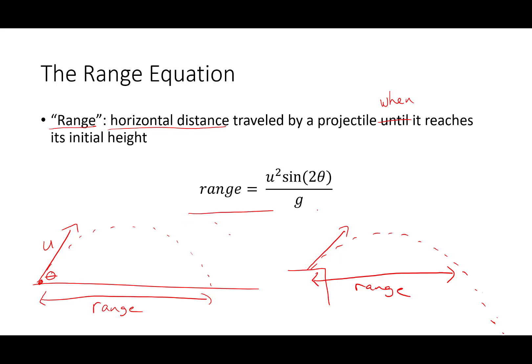The equation for the range of a projectile is the initial speed squared times sine of 2 theta over g, where theta is the angle above the horizontal that our projectile's launched.